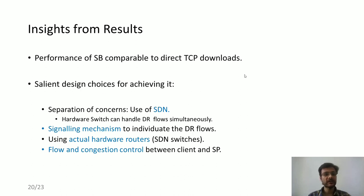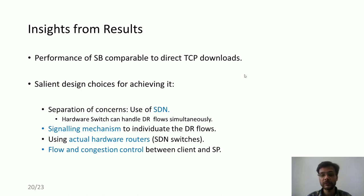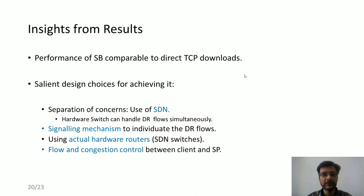Overall, the insight from the results is that Siege Breaker's performance is comparable to direct TCP downloads. This was achieved through multiple design choices: separating different operations of decoy routing, using a separate signaling mechanism to isolate DR flows, using actual SDN switches to redirect traffic efficiently, and implementing flow and congestion control between the client and SP, which provides both reliability and good performance.